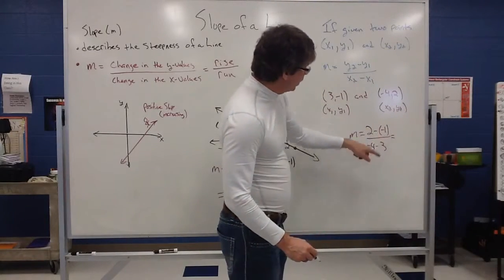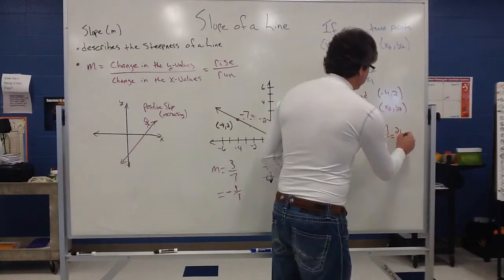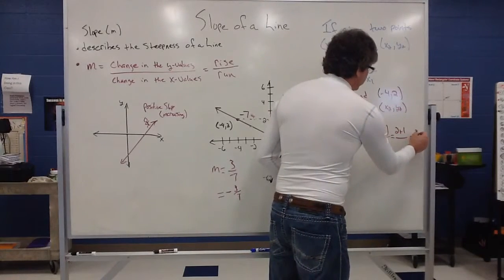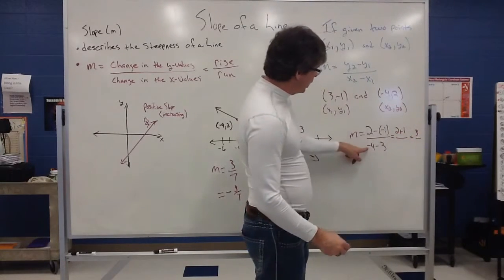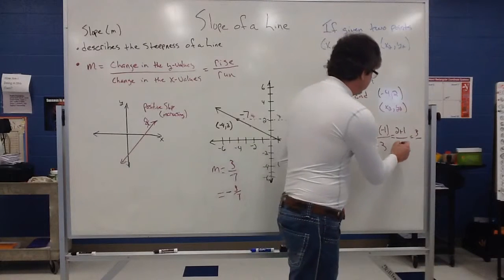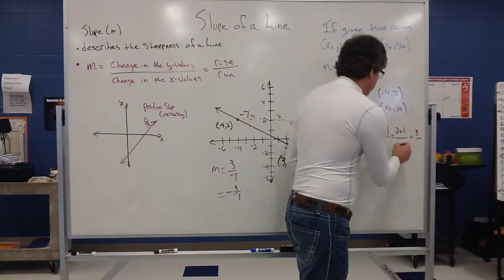So on the top, we have that double negative again. That's going to be the same thing as 2 plus 1. And that's going to turn into a 3 on the numerator. And a negative 4 and a negative 3 does indeed give me a negative 7.